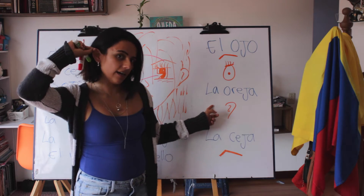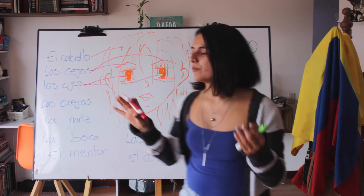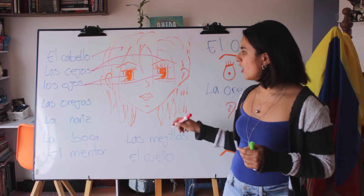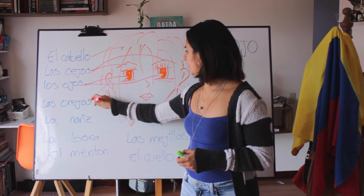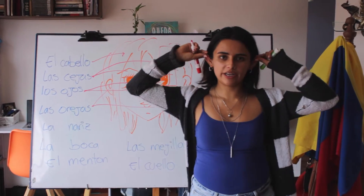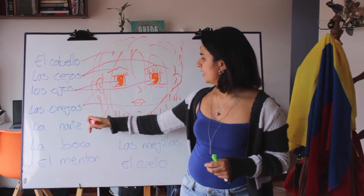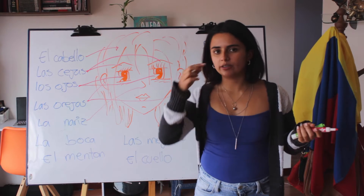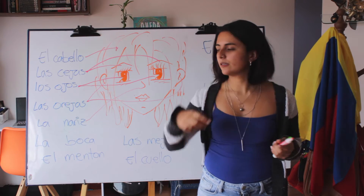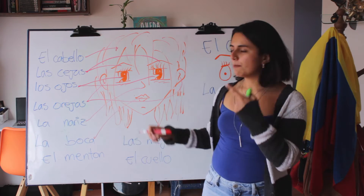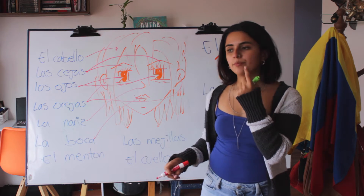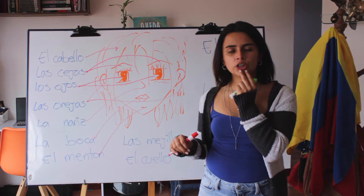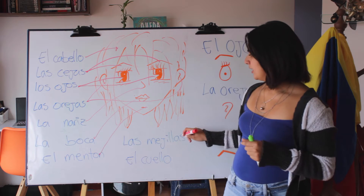Going back to the plural ones, we have los ojos, las orejas — orejas means ears. La nariz, because we just have one nose — nariz. La boca means mouth. El mentón means chin.